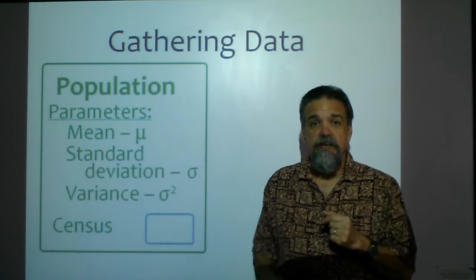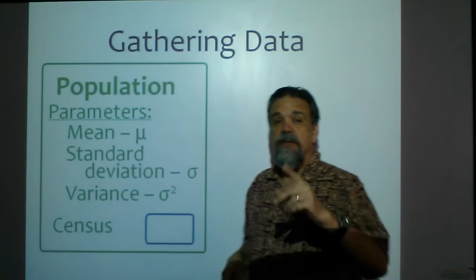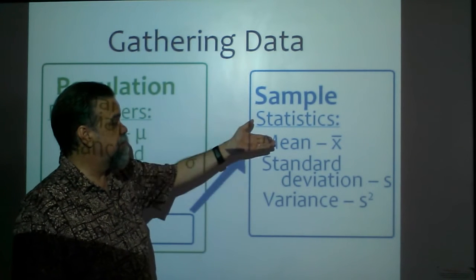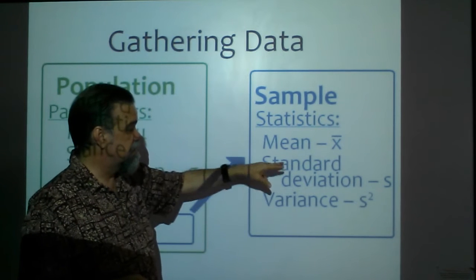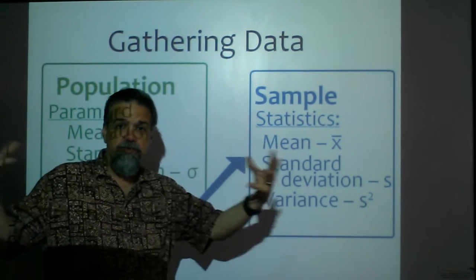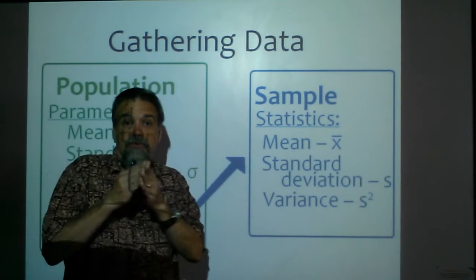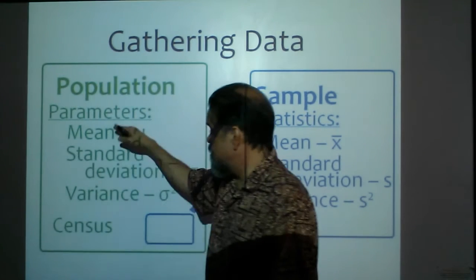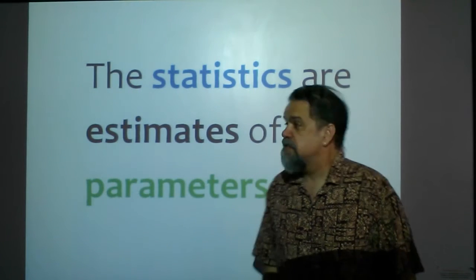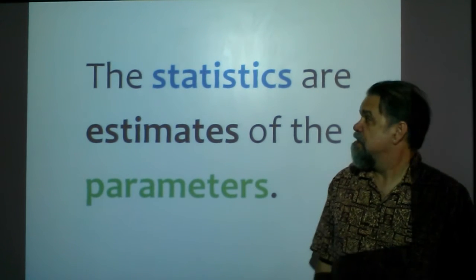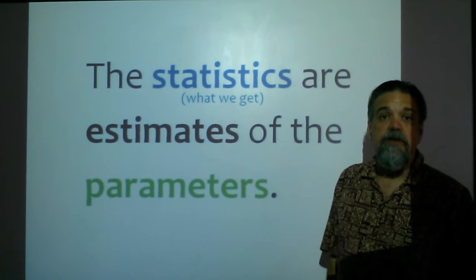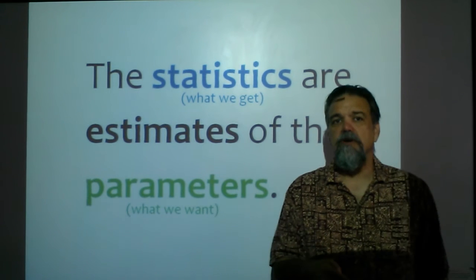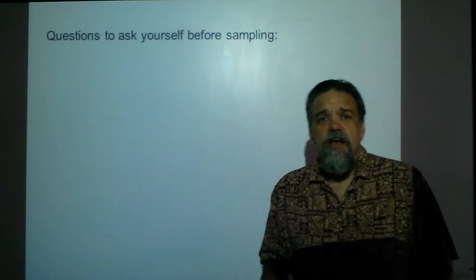So instead, we take a sample. From the sample we can find the mean, the standard deviation, and the variance — telling us how spread apart our measurements are. If all measurements are the same, the standard deviation and variance would be zero. These numbers from the sample are called statistics, whereas the corresponding numbers from the population are called parameters. Statistics are estimates of the parameters.